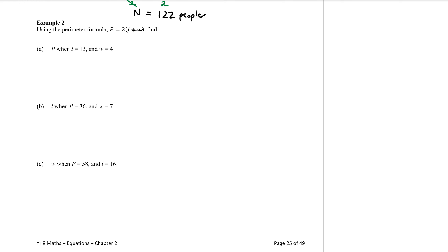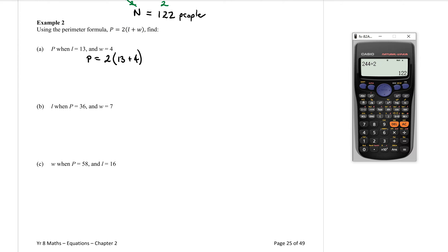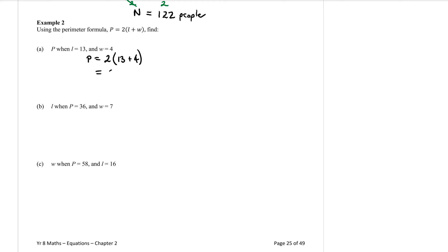So this is our formula. Let's sub in what we know. We don't know the p, so we're going to have p equals 2 bracket — l is 13 — then we have a plus sign and w which is 4. Close the brackets. Then we just need to type that into the calculator: 2 bracket 13 plus 4 equals 34. So if the length is 13 and the width is 4, the perimeter is 34.